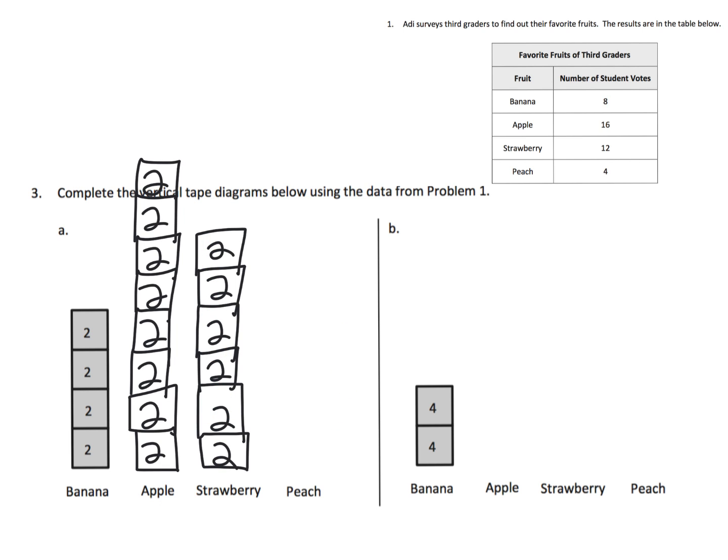And then lastly, we have peach, which is 4 students. 1, 2, 3, 4. And that is how it would look as a vertical tape diagram with the units being 2.